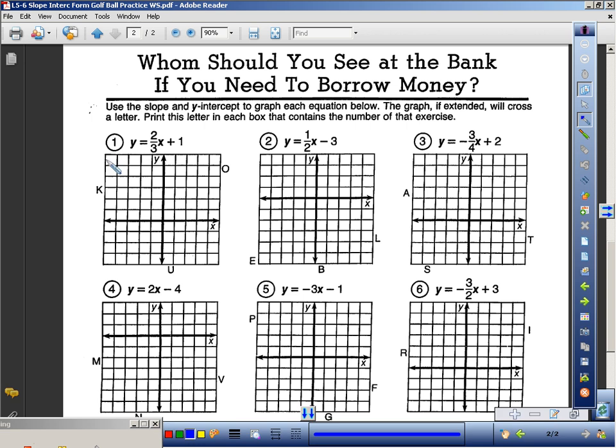So they want you to graph y equals two-thirds x plus one. I know that's my y-intercept. I'm going to graph my y-intercept first.